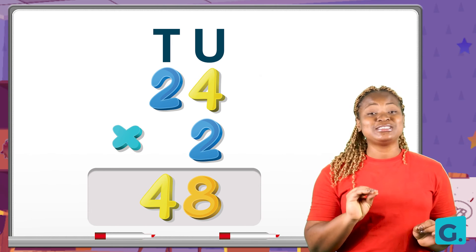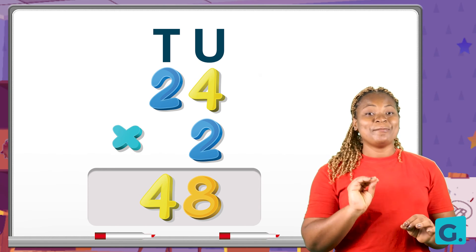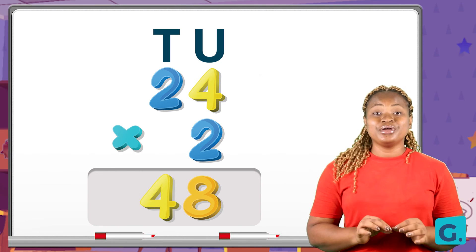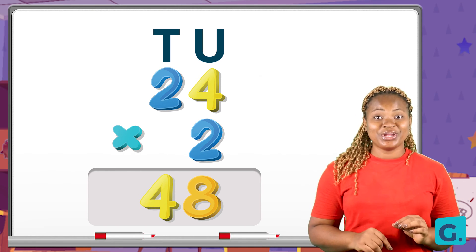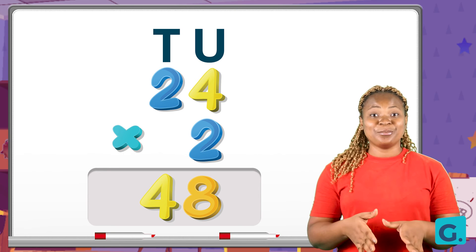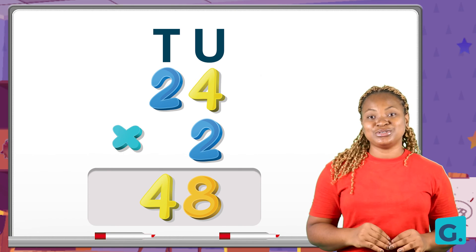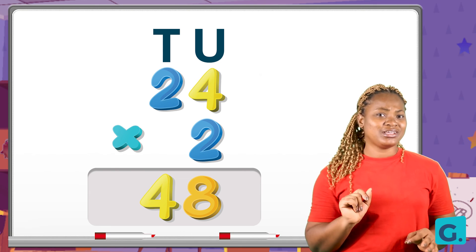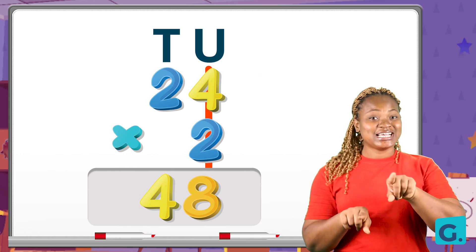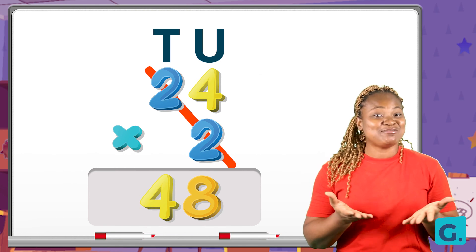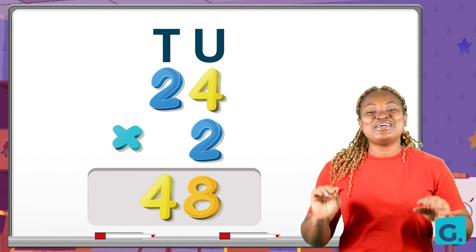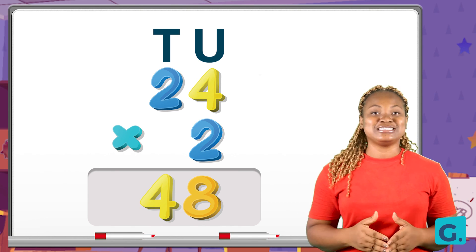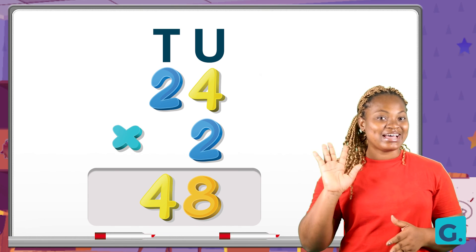Today we have learned how to multiply a two-digit number by a one-digit number without regrouping. Remember, when you have a two-digit number and a one-digit number, always arrange the numbers and place your values correctly, then multiply in this order — do you remember the order? Unit times unit, unit times tens. If you do this correctly, you're always going to arrive at the right answer. Keep practicing, friends! Bye bye!